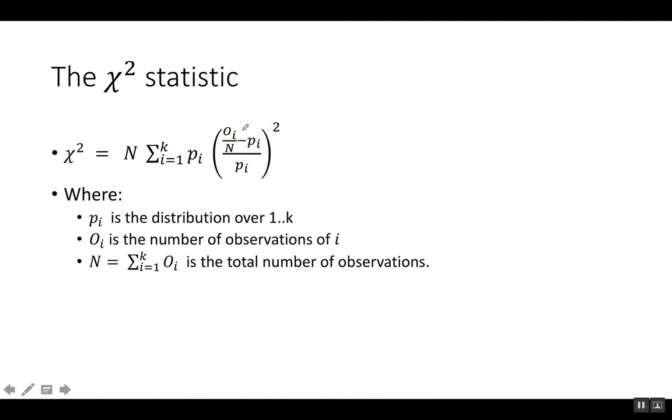We see that o_i over n is the empirical distribution or the fraction of observations that are of type i, and we compare it to p_i. We look at the relative difference and then we square it.